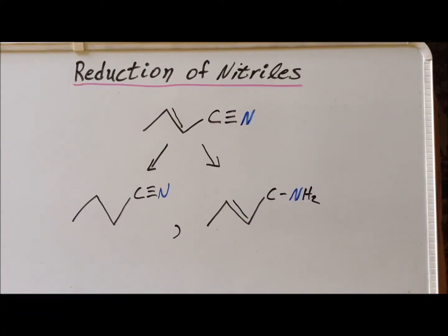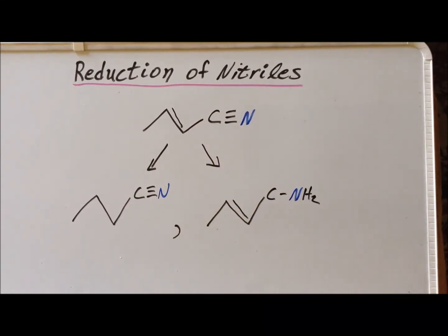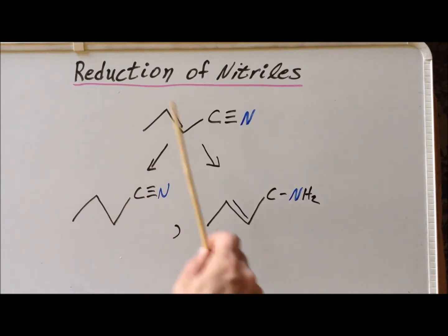For the rest of the video, we are going to look at the case where we have an unsaturated nitrile. Our first example is 2-butenenitrile. We can reduce specifically the nitrile functionality by using chemical methods like lithium aluminum hydride or sodium borohydride with cobalt chloride, specifically reducing the cyano group while keeping the alkene functionality intact, giving us 2-butenamine. On the other hand, by carefully choosing our hydrogenation catalyst — something like platinum on aluminum — we can specifically reduce the alkene functionality while leaving the cyano group alone, giving us butanenitrile.